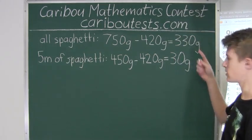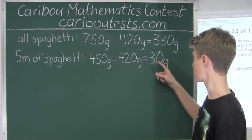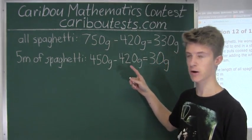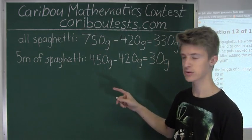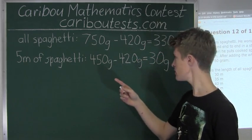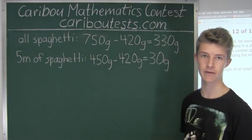330 can also be written as 300 plus 30. And 30 goes into 30 once, and 30 goes into 300, well, since there's that extra 0, it must be 10 times. So it goes in 10 times and 1 time, so 10 plus 1 is 11, so therefore 30 goes into 330 11 times.